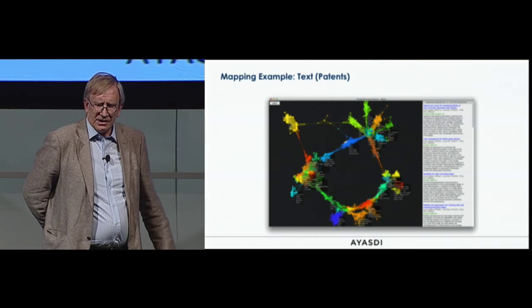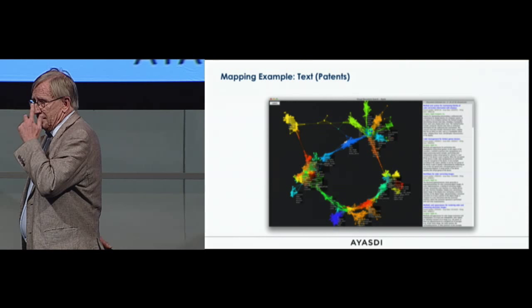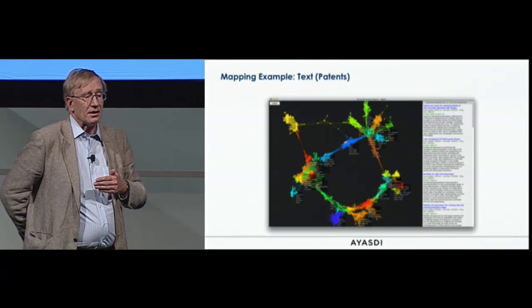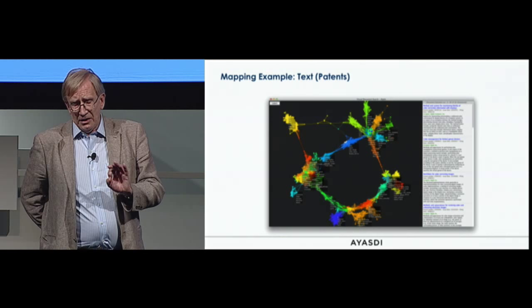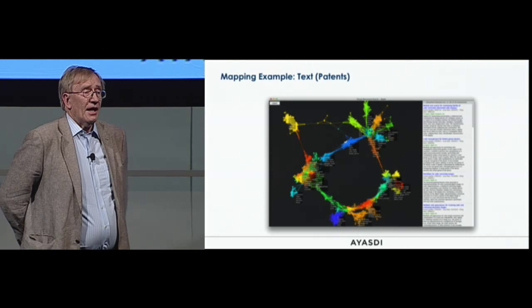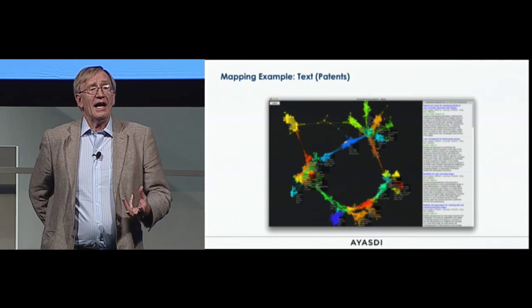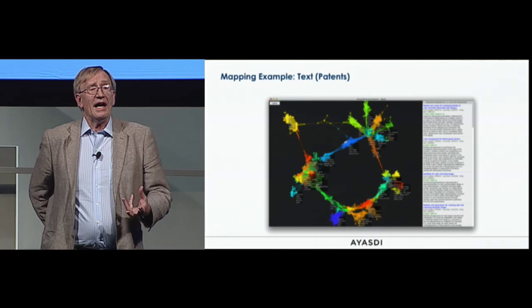One can also view this idea as a method for doing search in a better way. When we get a search result from Google, we get a long sequence of 10,000 hits. If you look for Apple patents and use some natural language processing on them, you can instead get this kind of network model for the results — making very clear which ones are part of UI and which ones are part of various other functions that Apple does.